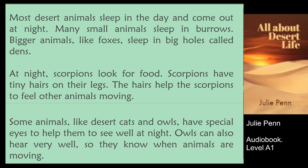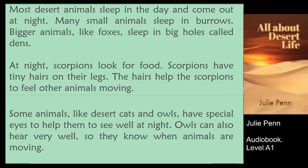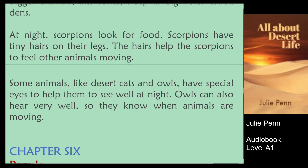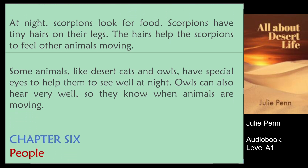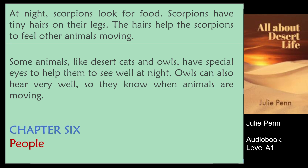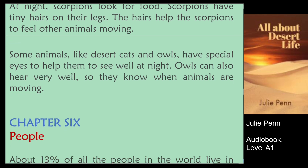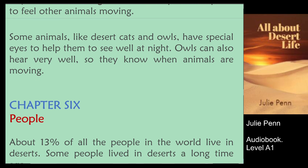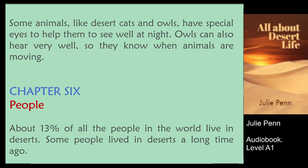At night, scorpions look for food. Scorpions have tiny hairs on their legs. The hairs help the scorpions to feel other animals moving. Some animals, like desert cats and owls, have special eyes to help them to see well at night. Owls can also hear very well, so they know when animals are moving.